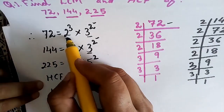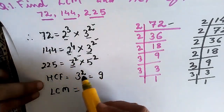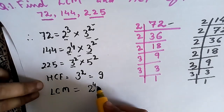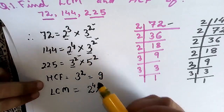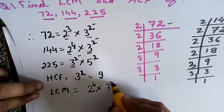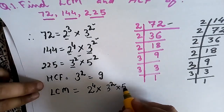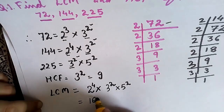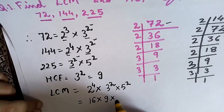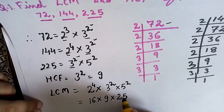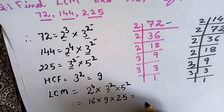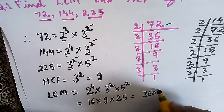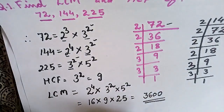For LCM: the powers of 2 are 3 and 4, so we take 2⁴. The highest power of 3 is 3², and the highest power of 5 is 5². So LCM = 2⁴ × 3² × 5² = 16 × 9 × 25 = 3600. Therefore, the LCM of 72, 144, and 225 is 3600.